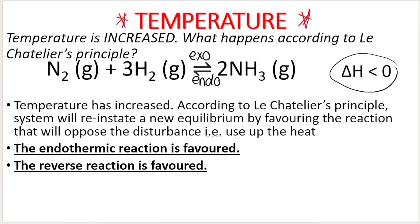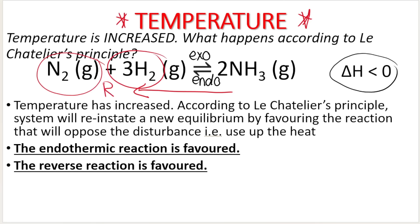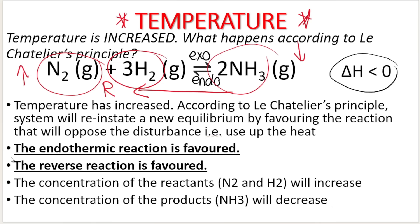If we favor the reverse reaction, what's ultimately going to end up happening? I'm going to increase the concentration of the reactants — these are going to increase — and I'm going to decrease the concentration of the products. That's exactly how you explain it using Le Chatelier's principle.